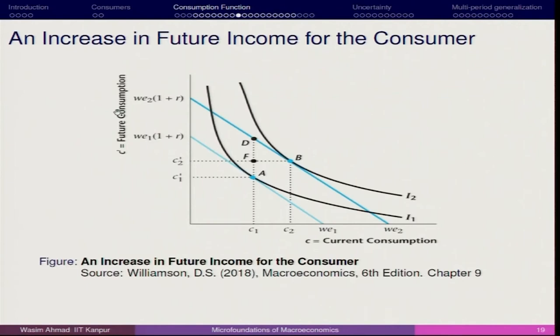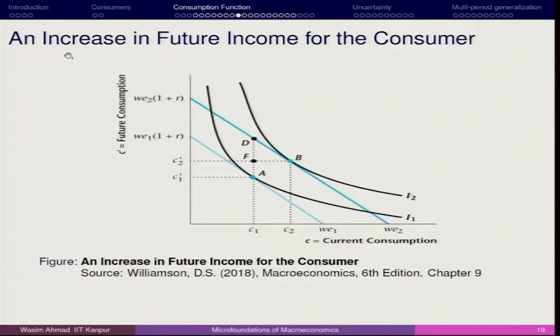What about an increase in future income? Suppose you are studying in college and in your last semester you have got a job opportunity — you know that once you start your job, your income is going to increase. An increase in future income for the consumer: the representative consumer will have a similar movement because the budget line does not change its slope. Once the budget line slope is unchanged, it is obvious that the representative consumer will have an increase in both period consumptions — this is how it looks.